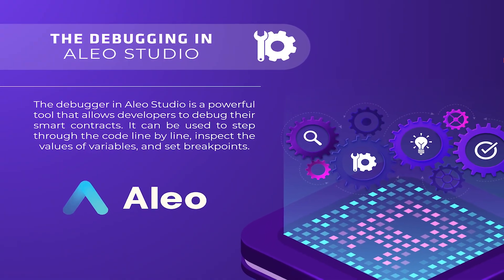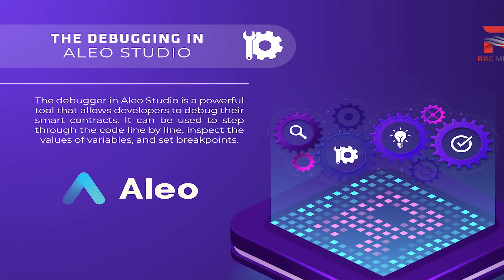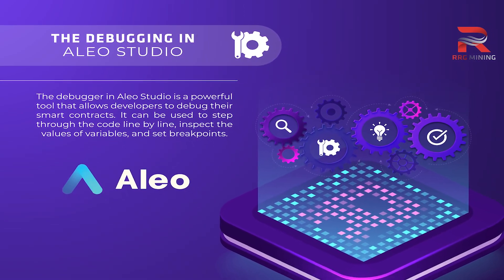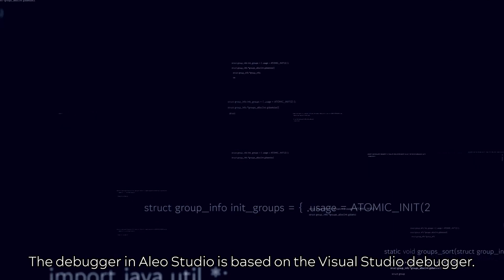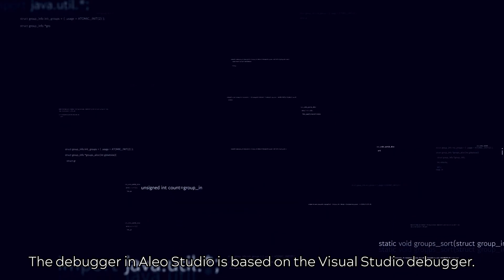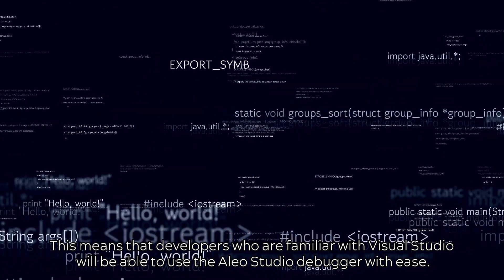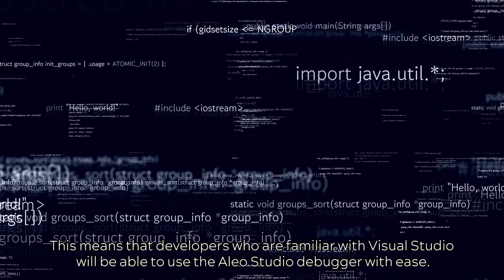The Debugger in Alio Studio is a powerful tool that allows developers to debug their smart contracts. It can be used to step through the code line by line, inspect the values of variables, and set breakpoints. The Debugger in Alio Studio is based on the Vigil Studio Debugger, which means that developers who are familiar with Vigil Studio will be able to use the Alio Studio Debugger with ease.